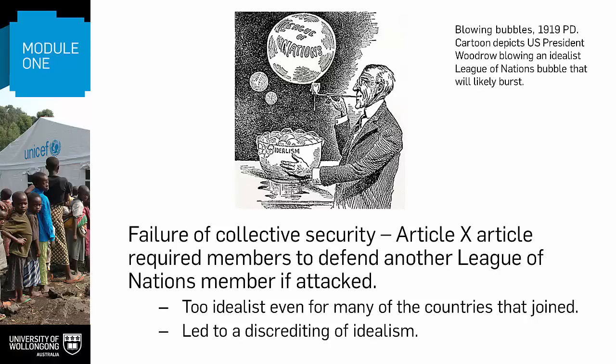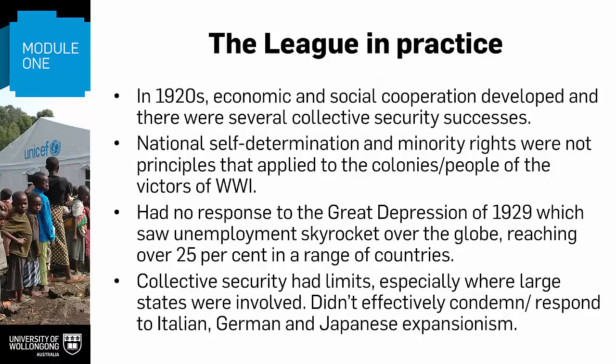Moreover, this approach was also too much for many of the other nations that joined, especially the big powers whose action was needed. The failure of the League with the outbreak of World War II led to quite a bit of discrediting of the idea of idealism in international relations. Reviewing the work of the League overall, there are a few key things to be noted. First, economic and social cooperation did develop, and notable successes included aid to refugees and reducing the global trade in opium. There were also several collective security successes, helped on by the public horror at the losses from the First World War. For example, a Swedish-Finnish dispute in 1920-21 over the Åland Islands was settled, and a conflict between Greece and Bulgaria in 1925 was avoided.